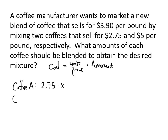How much is the coffee B portion going to cost? It's going to be $5 times the amount of coffee B we use. We know that in total we're going to have one pound of coffee, so if we have x pounds of coffee A, we're going to have 1 minus x pounds of coffee B. So the cost for coffee A is 2.75x and the cost for coffee B is 5 minus 5x.